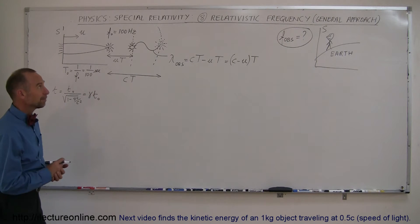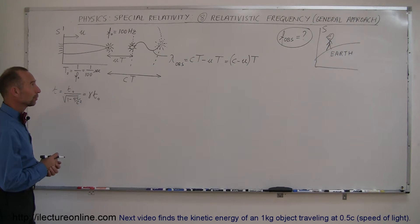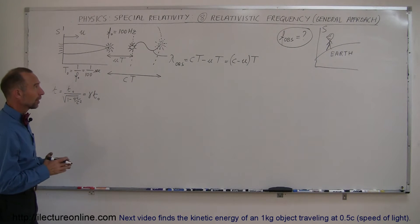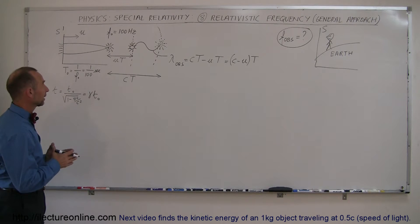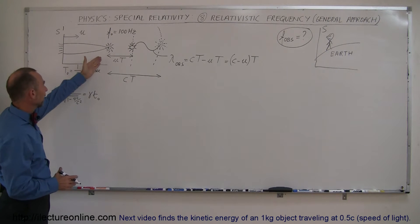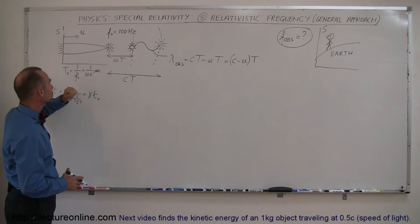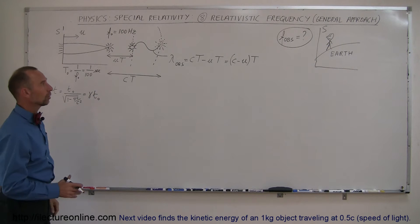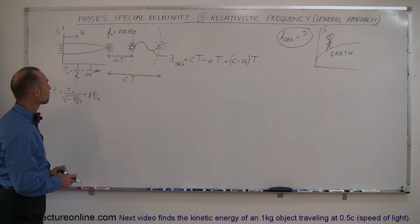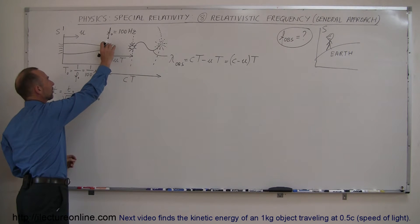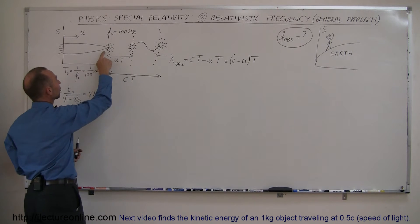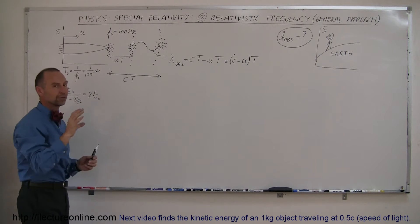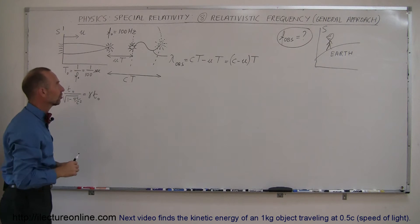Welcome to Electronline, and here we're going to discover another result of relativistic effects. Let's say we have a spaceship traveling very fast with velocity U relative to the stationary reference frame, and at the very front of the spaceship there is a flashing light that flashes at a frequency of 100 Hertz, so 100 flashes per second.